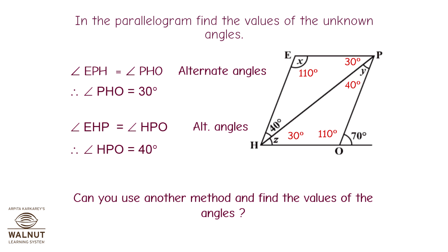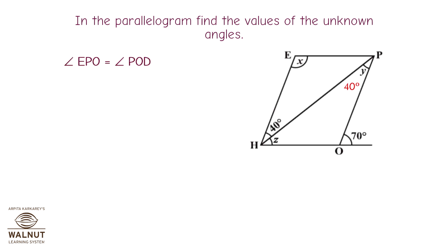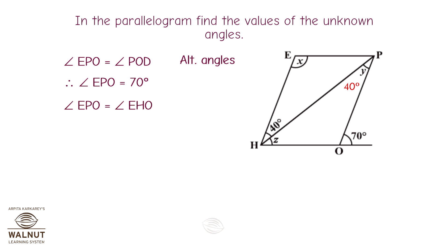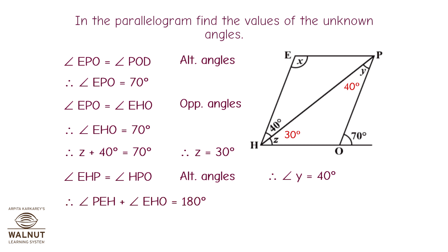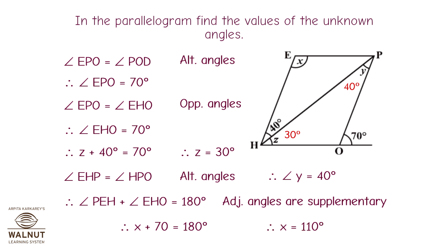Using another method: angle EPO equals angle POD as alternate angles, therefore angle EPO = 70°. Angle EPO equals angle EHO as opposite angles, so angle EHO = 70°. Therefore Z = 30°. Angle EHP equals angle HPO as alternate angles, so Y = 40°. Angle PEH + angle EHO = 180° as adjacent angles are supplementary, so X + 70° = 180°, giving X = 110°.